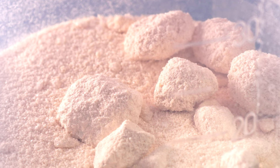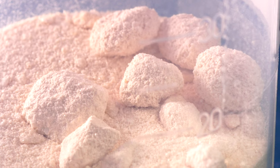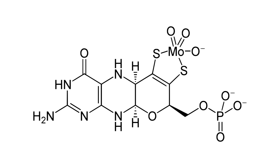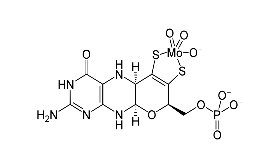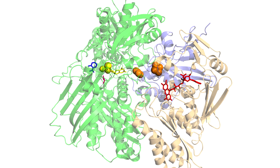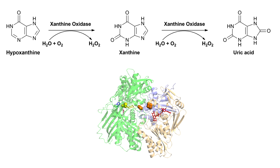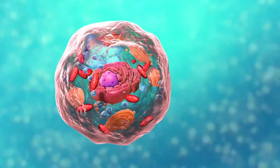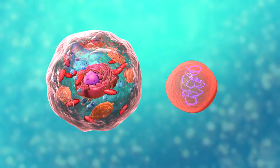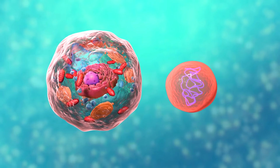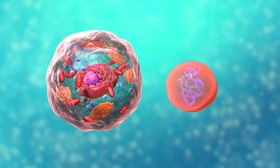Moreover, molybdenum is a very essential mineral in living organisms. It serves as a metal heteroatom in the active site of many enzymes — for instance, in the enzyme xanthine oxidase, which catalyzes the oxidation of hypoxanthine into xanthine, a very important process in the metabolism of nitrogen-containing purines in human cells.